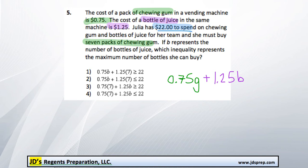As an inequality, that means she couldn't spend any more than 22, so it would have to be less than or equal to 22, because you could spend up to $22 but nothing more than that.